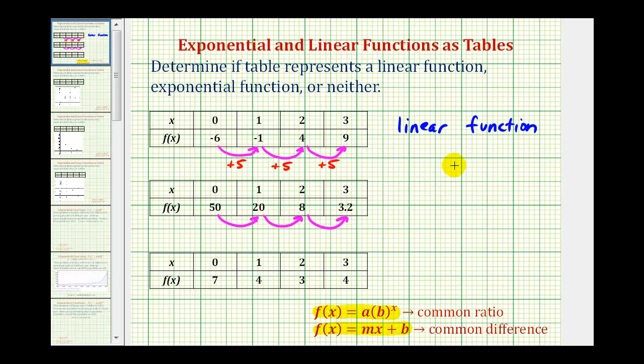If it's exponential, we'd be multiplying by the same value each time, which is hard to tell, and that's why if it's exponential, we can test to see if we have a common ratio, so now we'll find the ratio of 20 to 50, which is equal to 2/5, or 0.4. So if it's exponential, that means we're multiplying by 0.4 each time.